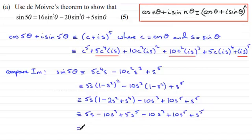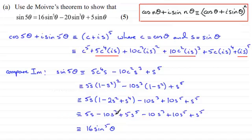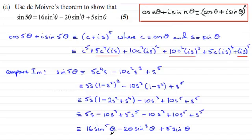Grouping terms and replacing s with sin θ: for sin⁵θ terms we have 5 + 10 + 1 = 16, giving 16sin⁵θ. For sin³θ terms: −10 − 10 = −20, giving −20sin³θ. And for sin θ terms: +5sinθ. So sin(5θ) ≡ 16sin⁵θ − 20sin³θ + 5sinθ, which is what we had to show.